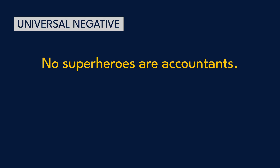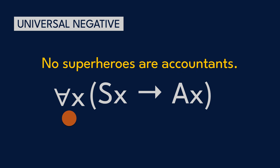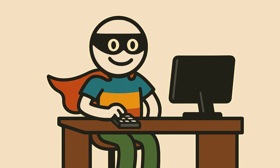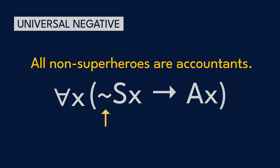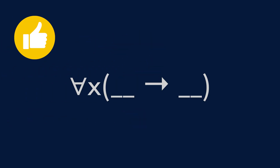How about the universal negative: 'No superheroes are accountants'? This is a universal claim about all superheroes, so again we use the universal quantifier, pairing it with an if-then statement. We get: 'For all X, if X is a superhero, then X is an accountant.' But we need to include the negation symbol — and be careful where. If we place it at the front, we get 'Not all superheroes are accountants' — maybe true, but not what we wanted. If we move it to negate the antecedent, we get 'All non-superheroes are accountants' — definitely not what we wanted. So we place the negation on the consequent: 'For all X, if X is a superhero, then X is not an accountant.' No superheroes are accountants. The lesson: be careful with placement of the negation symbol, and remember to use if-then with the universal.